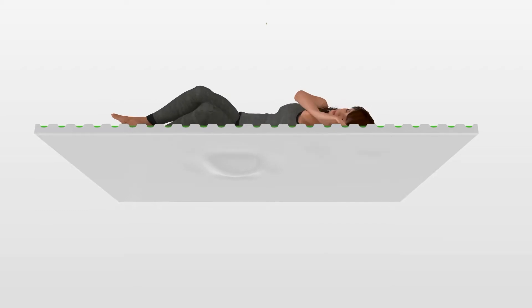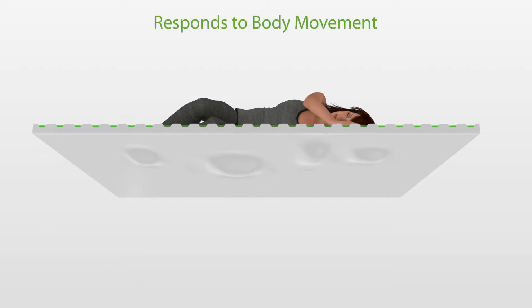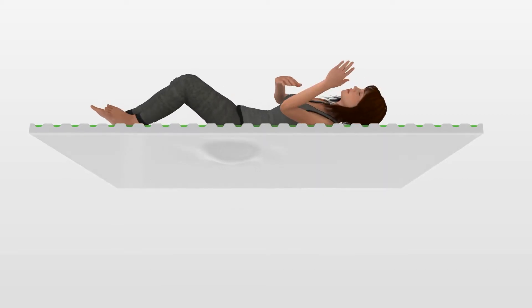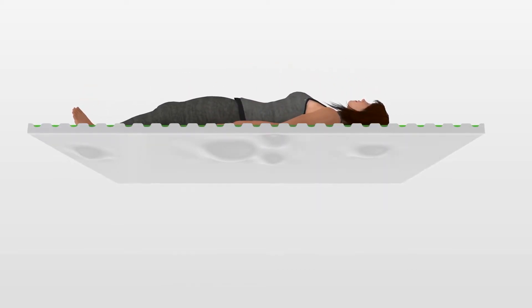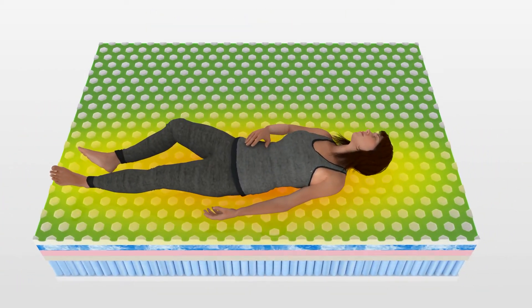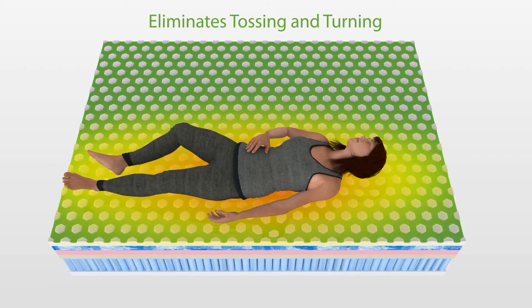As you sleep, the 3D Matrix layer responds to body movement and weight shifts immediately, allowing the sleeper to change positions effortlessly. The GhostBed 3D Matrix continuously relieves pressure and reduces the body's need to reposition itself, virtually eliminating tossing and turning.